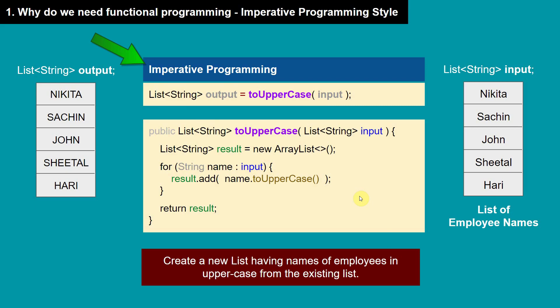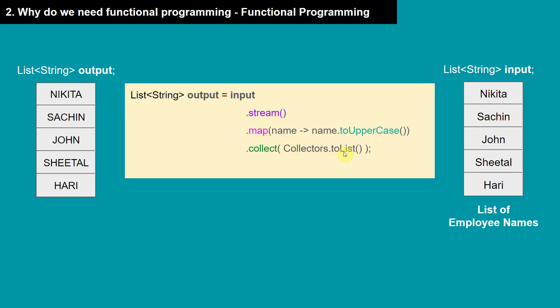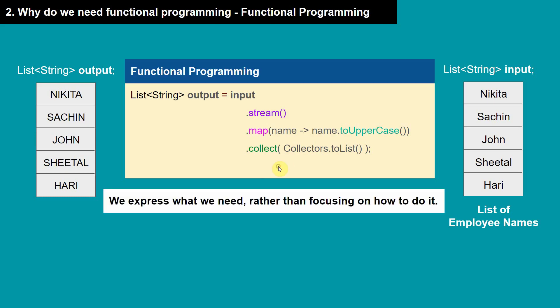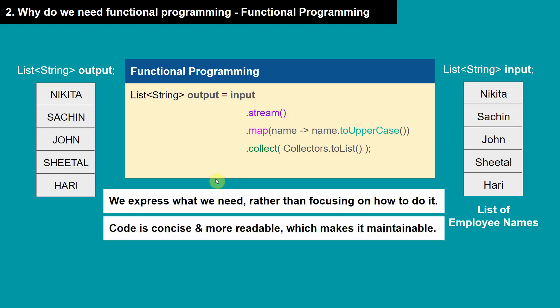Now consider this example where we tell Java to stream the elements of the input list, then map each element to uppercase, and then collect it into a new list. Basically, we are not telling Java how to do it — we are just telling Java what to do. This kind of programming is called functional programming, where we express what we need rather than focusing on how to do it.